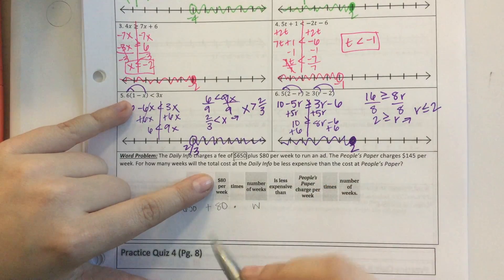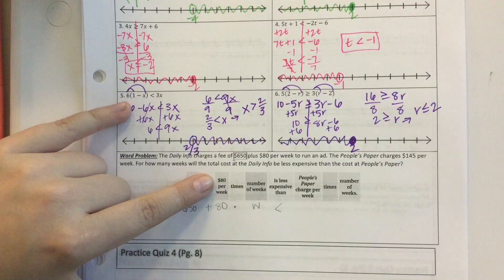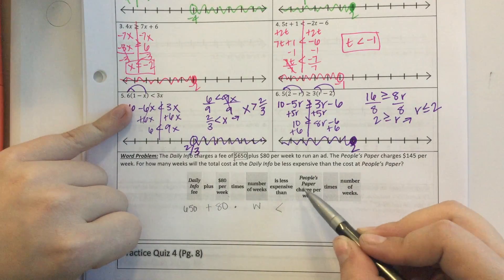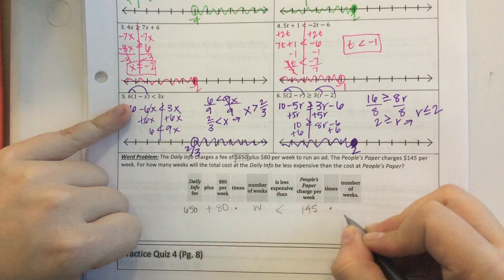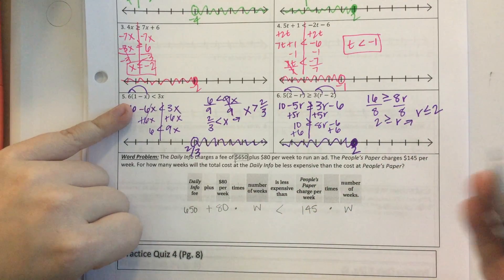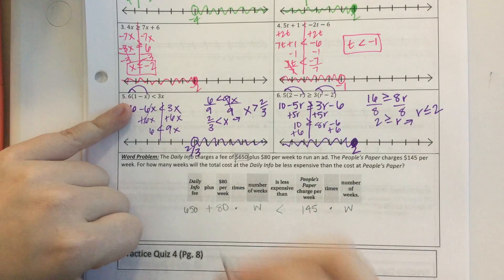Is less expensive than - well that's a less than symbol. People's paper charge per week is $145 times the number of weeks. So we just wrote an inequality with variables on both sides.